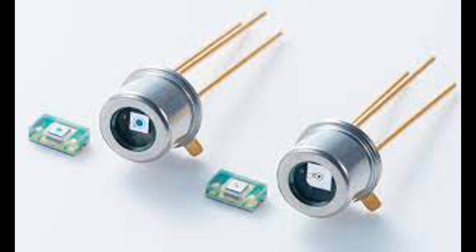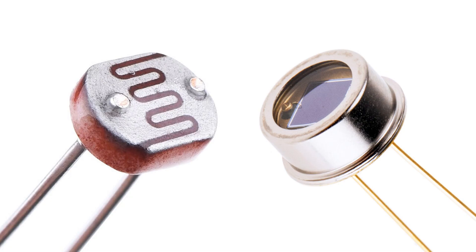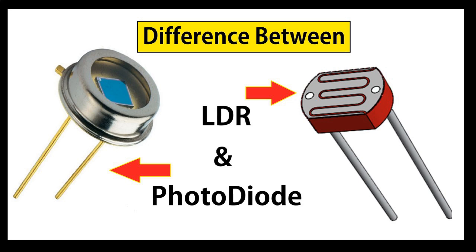Optical communication: Photodiodes are essential in converting light signals back into electrical signals at the receiving end of fiber-optic communication systems, enabling high-speed data transmission over long distances. They are also used in optical transceivers that convert electrical signals into optical signals and vice versa, facilitating communication in data centers and telecommunication networks.